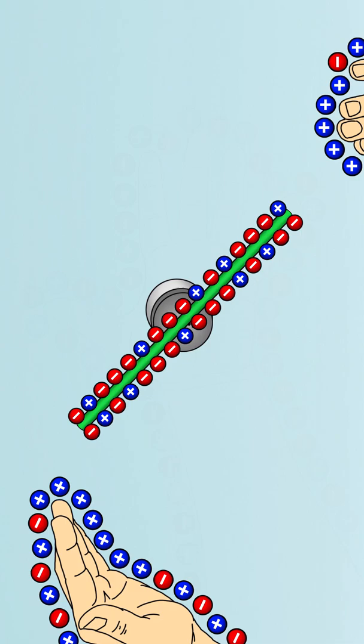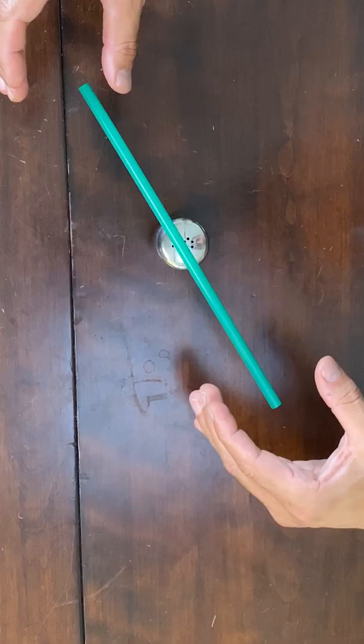As your hands approach the straw, the excess electrons on the straw repel some of the electrons on your skin, leaving an area of positively charged protons behind.